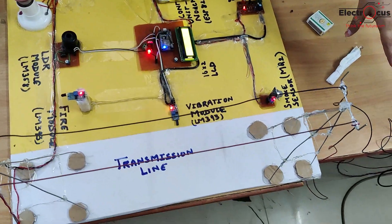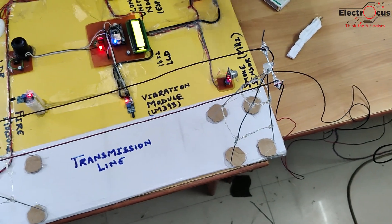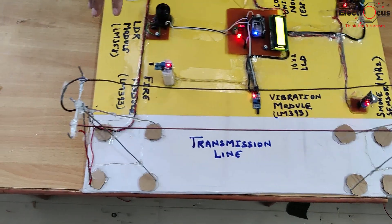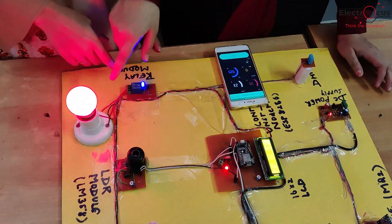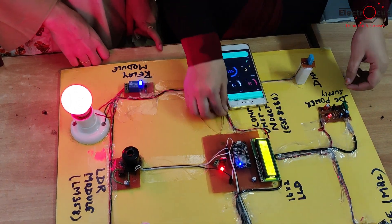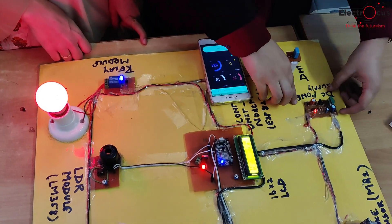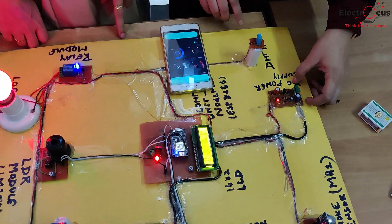First of all we are giving a 220 volt AC supply. The 220 volt AC supply is transmitted through the transmission line and the first end of this input supply is connected to the supply system.